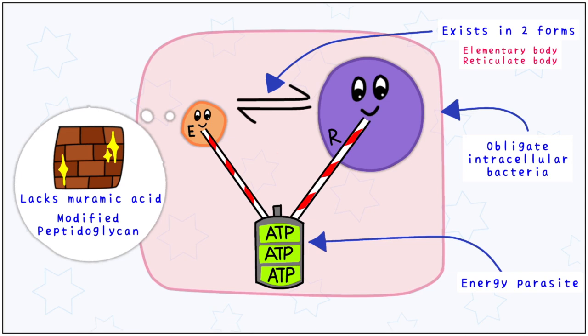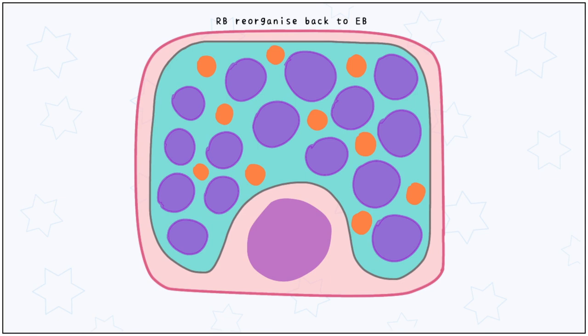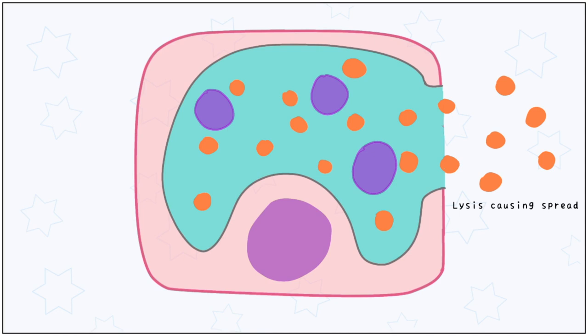To help us understand the difference between elementary body and reticular body, let us look at the life cycle of chlamydia. The elementary body has the proteins required to bind to the host cells, where it attaches. This elementary body then enters the cell through an inclusion. Inside this vesicle, the elementary body changes into the reticular form. Here, it replicates and starts to reorganize back into elementary body. Cell lysis causes them to spill out, where they then go and infect other cells.